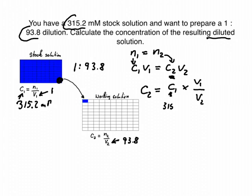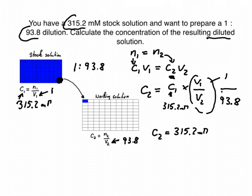And that here is our dilution factor. So we took one part from the stock into a total volume of 93.8. The units cancel each other out, so for C2 we can write C2 equals 315.2 millimolar times 1 over 93.8.